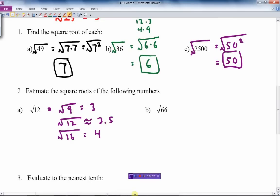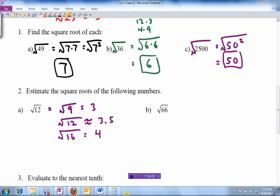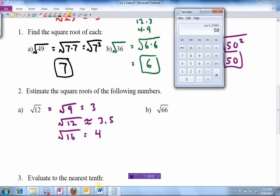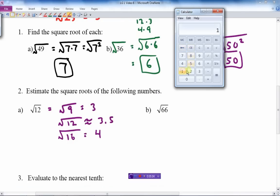Well, let's see how close we are and get our calculator back up here again. And so let's do this. 12, square root, and there's the square root symbol again. 3.46. So that rounds off to 3.5. That's a really, really good answer.